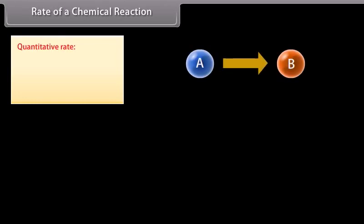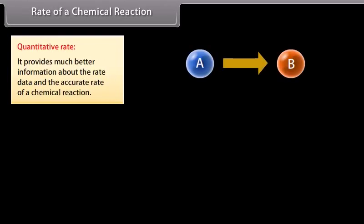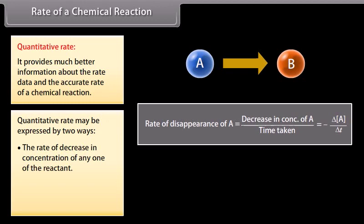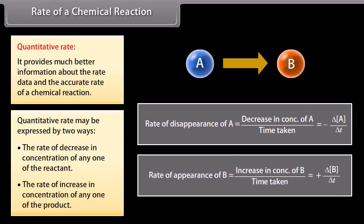Quantitative rate provides much better information about the rate data and the accurate rate of a chemical reaction. Quantitative rate may be expressed by two ways: the rate of decrease in concentration of any one of the reactants, or the rate of increase in concentration of any one of the products.